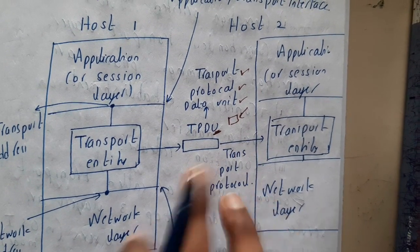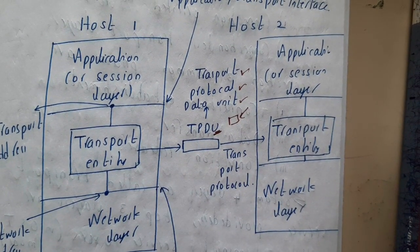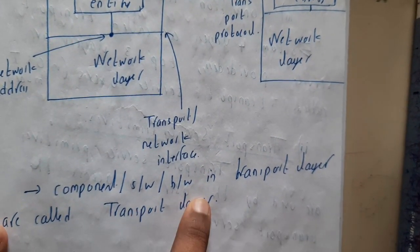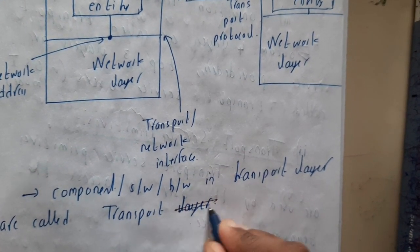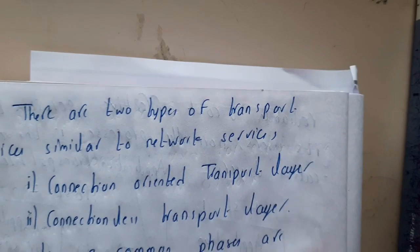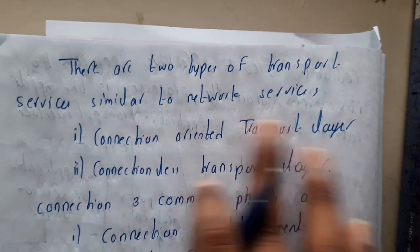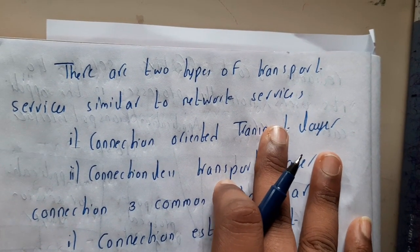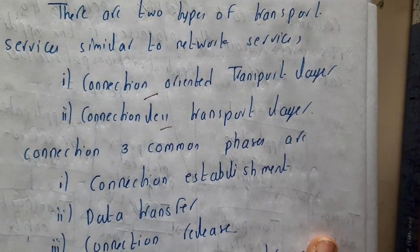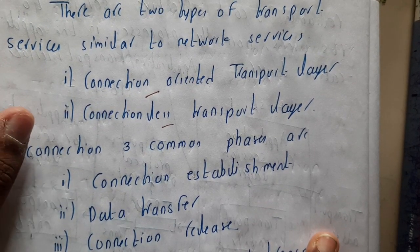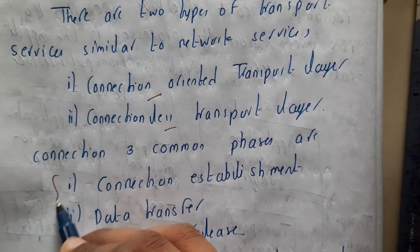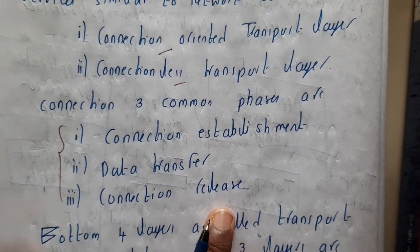Even if the connection appears direct in the diagram, remember it uses the lower layers. The software and hardware components in the transport layer are called transport entities. There are two types of transport services, similar to network services: connection-oriented and connectionless. In connectionless, you directly transmit the data. In connection-oriented, you first establish a connection, then transfer the data, then release the connection — these three steps are mandatory.